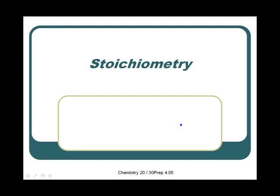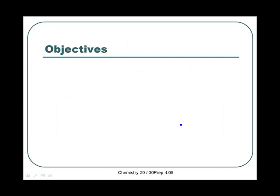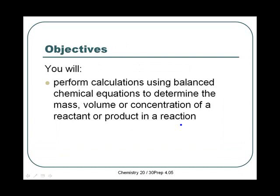Hello again. We're going to continue our lectures on stoichiometry. We're going to be looking at gravimetric stoichiometry in this lecture. In your textbook it's page 275 to 278. By the end of this lecture you'll be able to perform calculations using balanced chemical equations to determine the mass, volume, or concentration of a reactant or product in a reaction.